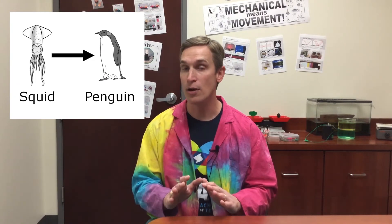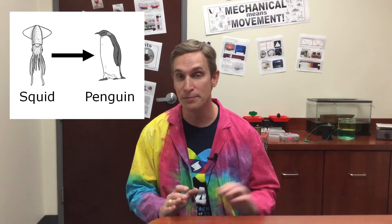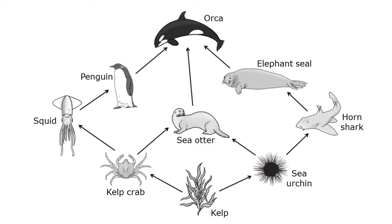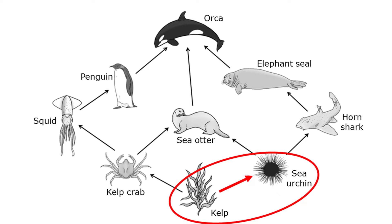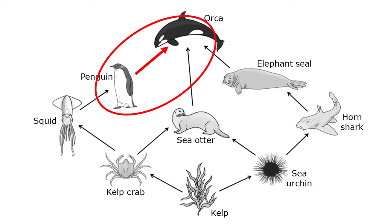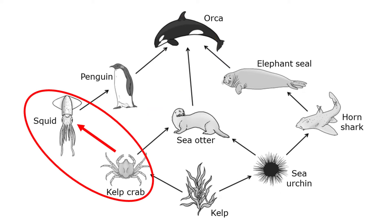Energy is transferred directly between two organisms when one organism is consumed by the other. In a food web, this is depicted by an arrow pointing from one organism to the other. So energy is transferred directly between the kelp and the sea urchin, or the sea urchin and the otter, the penguin and the orca, or the kelp crab and the squid.